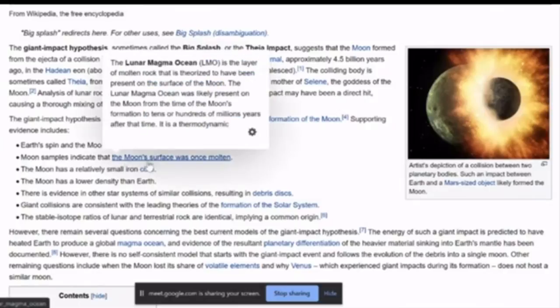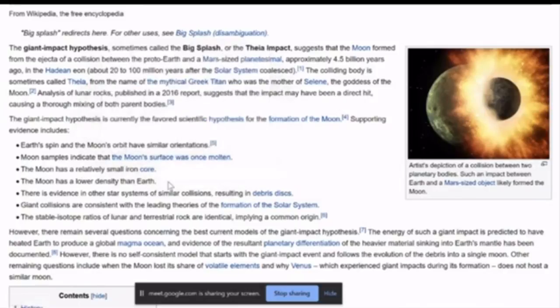Moon samples indicate that the Moon's surface was once molten. Without a bit of wood they've got. The Moon has a relatively small iron core, apparently. Determined that one. The Moon has a lower density than the Earth.